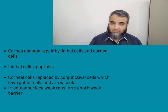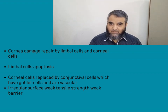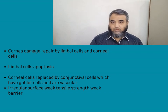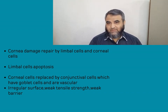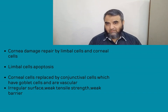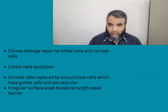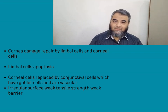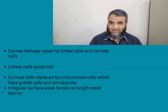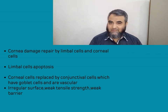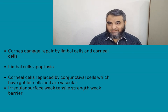The problem with conjunctival cells is that they have goblet cells and are relatively more vascularized. So when these conjunctival cells cover the corneal epithelial defect, the surface becomes irregular and has weak tensile strength. The clarity is also not the same as with epithelial cells covering and replacing the damaged area.